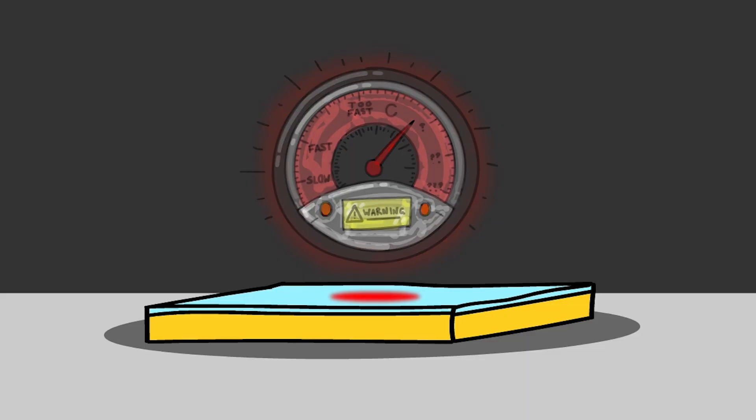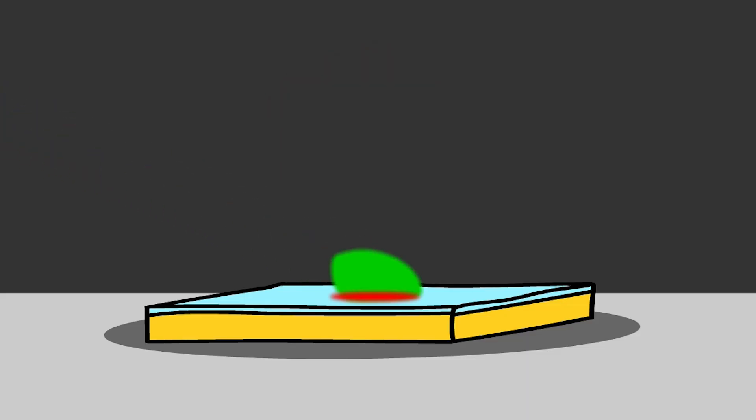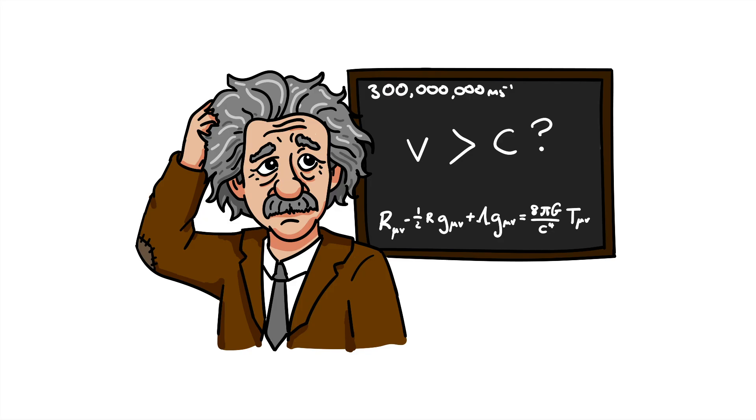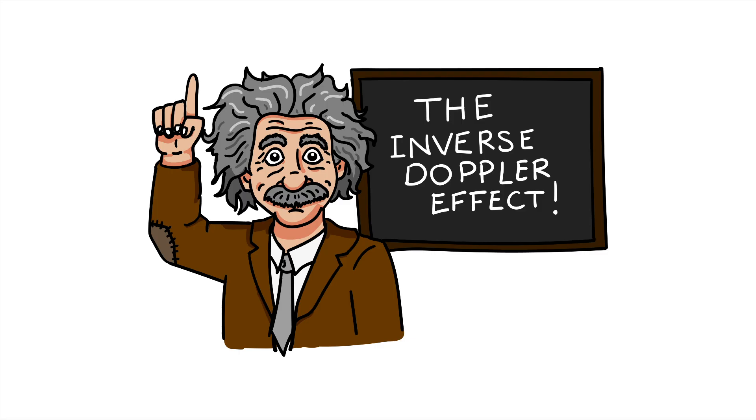However, when we make the mirror move faster than the speed of light, something strange happens. Blue light is now scattered backwards while red light is scattered forwards. Weird! When our mirror traveled faster than the speed of light, the science flipped. In this case, we measured the inverse Doppler effect.